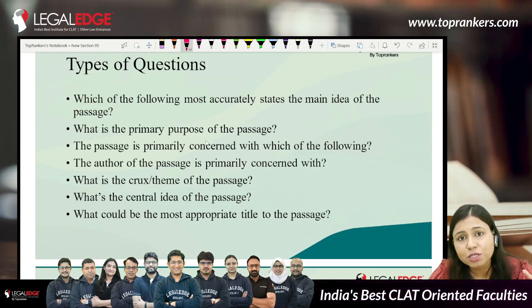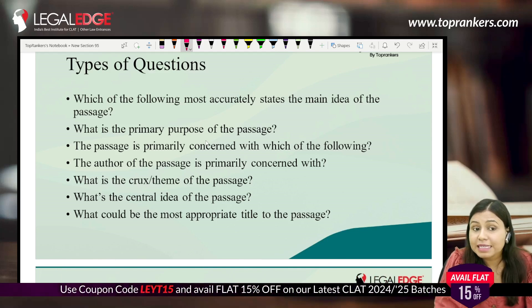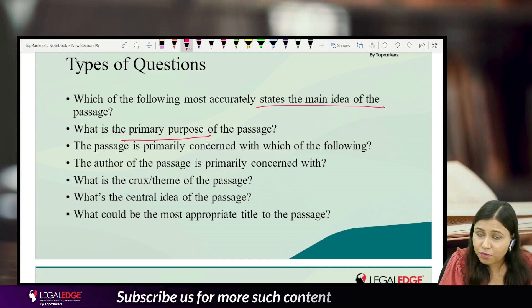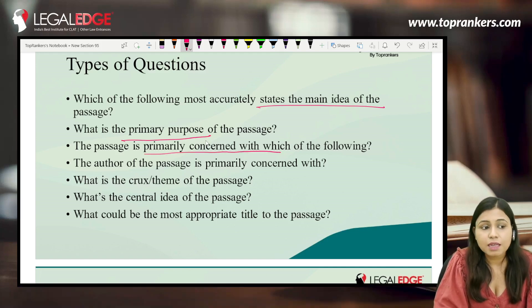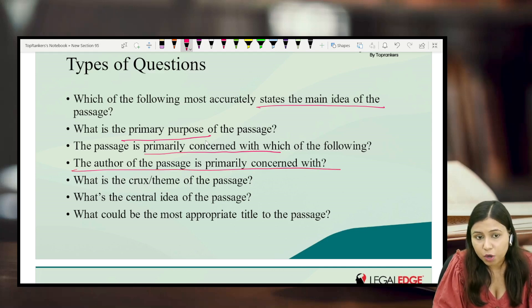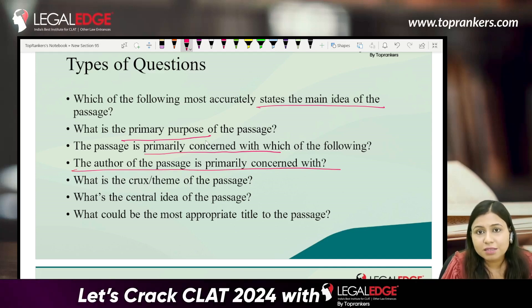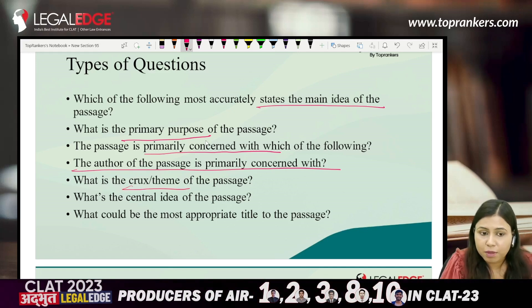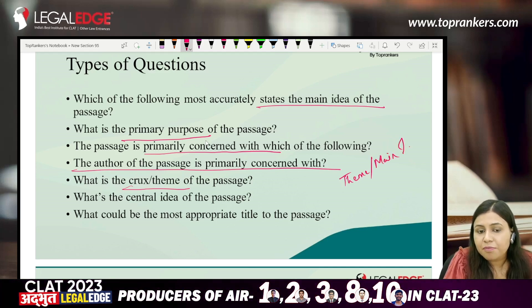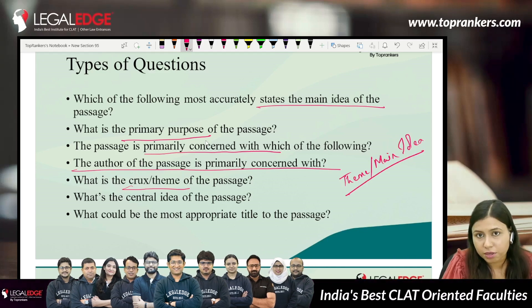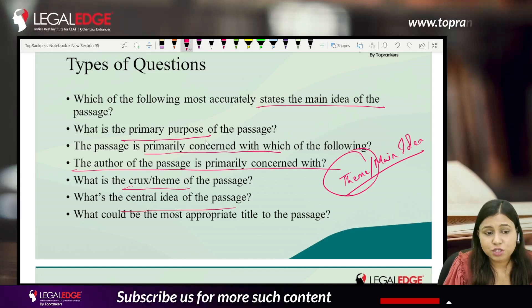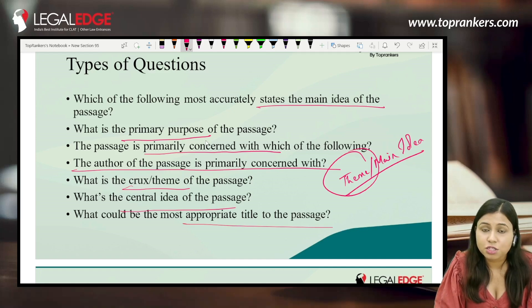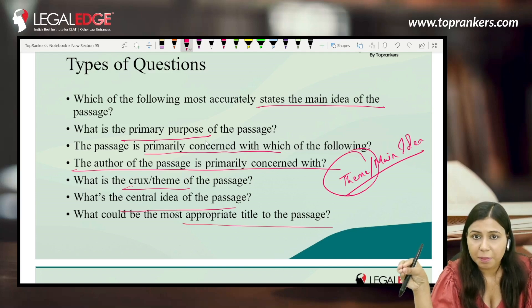Now, what are the different types of questions related to main idea? — 'Which of the following most accurately states the main idea of the passage?' — 'What is the primary purpose of the passage?' — 'This passage is primarily concerned with which of the following?' — 'The author of the passage is primarily concerned with what?' — 'What is the crux or theme of the passage?' — and 'What is the central idea of the passage?' Even a question about the title of the passage can relate to the main idea, since titles often revolve around it.